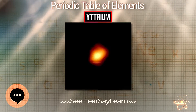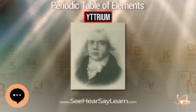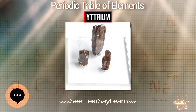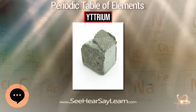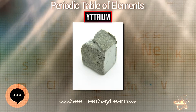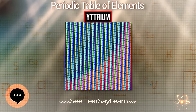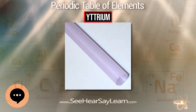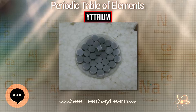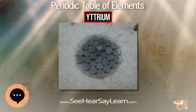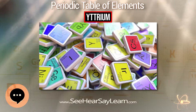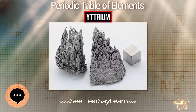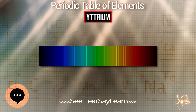Yttrium in the solar system was created through stellar nucleosynthesis, mostly by the s-process but also by the r-process. The r-process consists of rapid neutron capture of lighter elements during supernova explosions, while the s-process is a slow neutron capture of lighter elements inside pulsating red giant stars. Yttrium isotopes are among the most common products of the nuclear fission of uranium in nuclear explosions and reactors. The most important isotopes for nuclear waste management are ⁹¹Y and ⁹⁰Y, with half-lives of 58.51 days and 64 hours respectively.